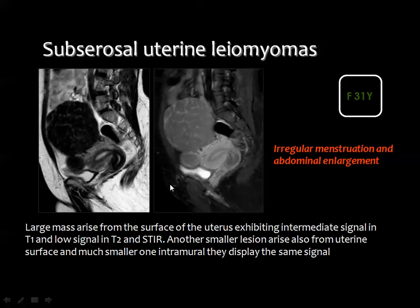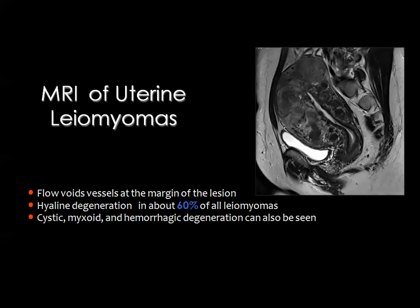A large fibroid in the fundus and a smaller adjacent one both show dark signal on T2-weighted images and enhancement after intravenous contrast on T1 fat-suppressed images. Uterine fibroids may show signal void vessels at their margin due to their vascularity. They may undergo hyaline, cystic, hemorrhagic, or myxoid degeneration, all of which alter the signal intensity of the fibroid mass.